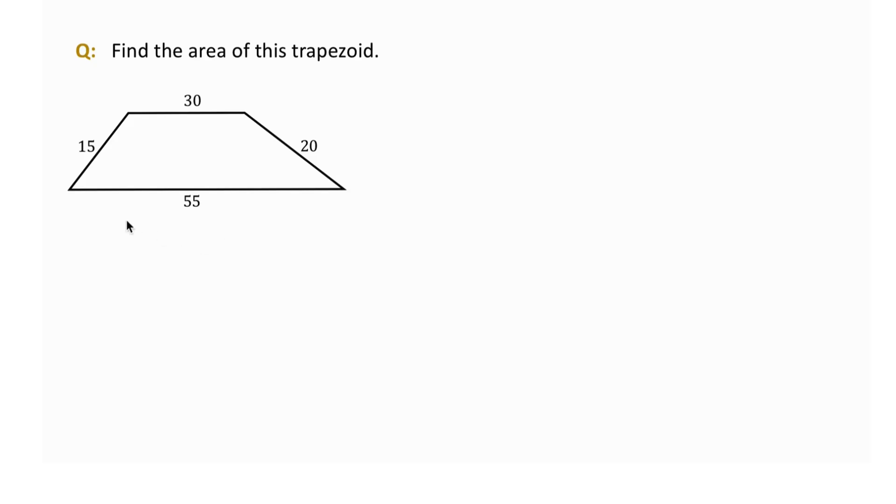To find the height, we drop perpendiculars from the top base down to the bottom. These create two right triangles on the left and right sides. Let the height be h.